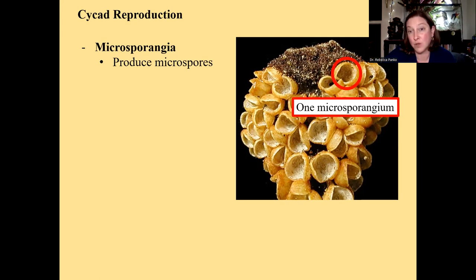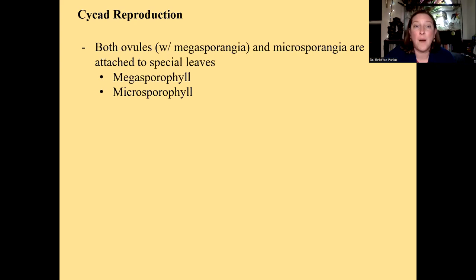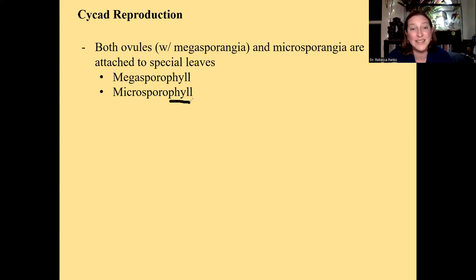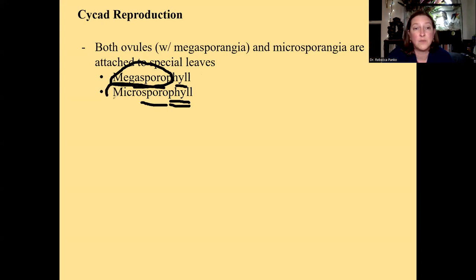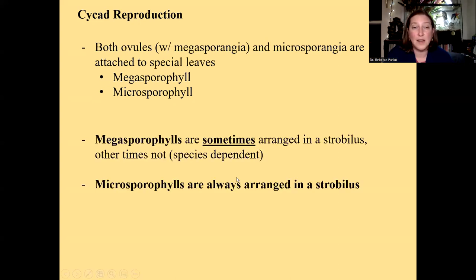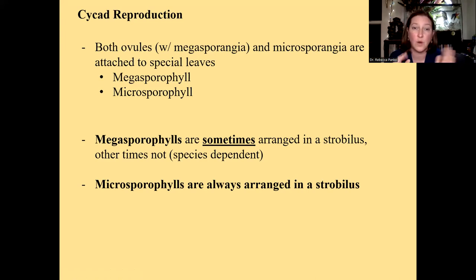We have megasporophylls and microsporophylls. 'Phyll' means leaf, 'sporo' refers to sporangia. A megasporophyll is a leaf that has a megasporangium associated with it. A microsporophyll is a leaf that has microsporangia associated with it. Ovules will be attached to megasporophylls, and microsporangia will be attached to microsporophylls. Megasporophylls are sometimes arranged in a strobilus and sometimes not, depending on the species. Microsporophylls on cycads are always arranged in a strobilus.